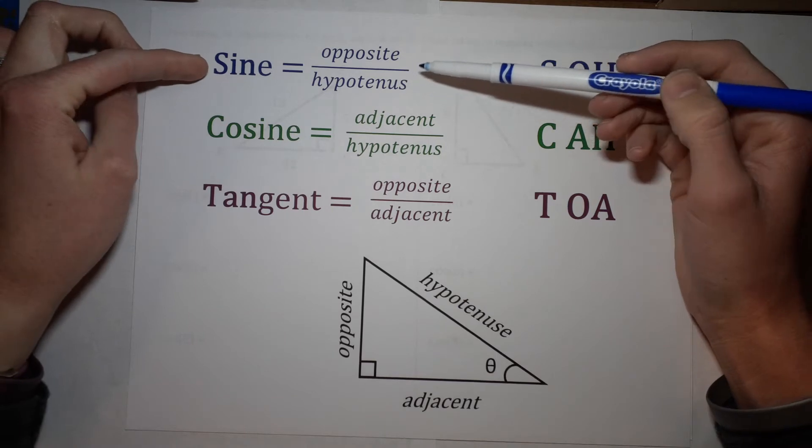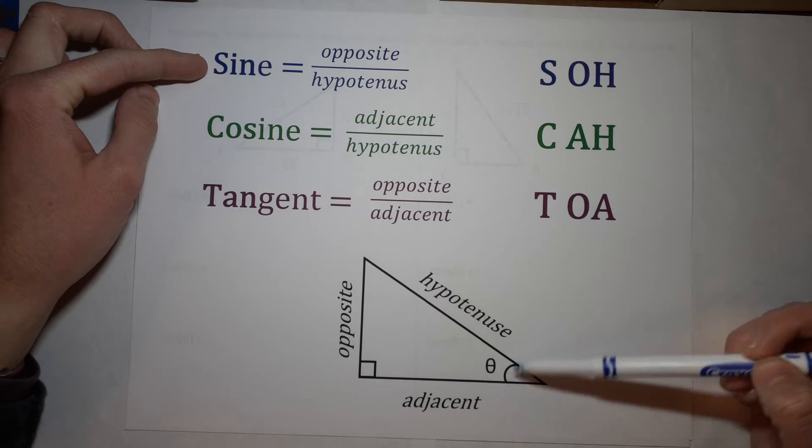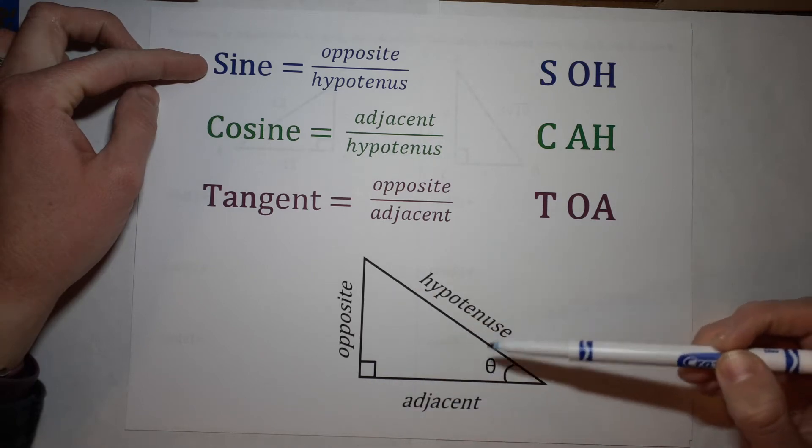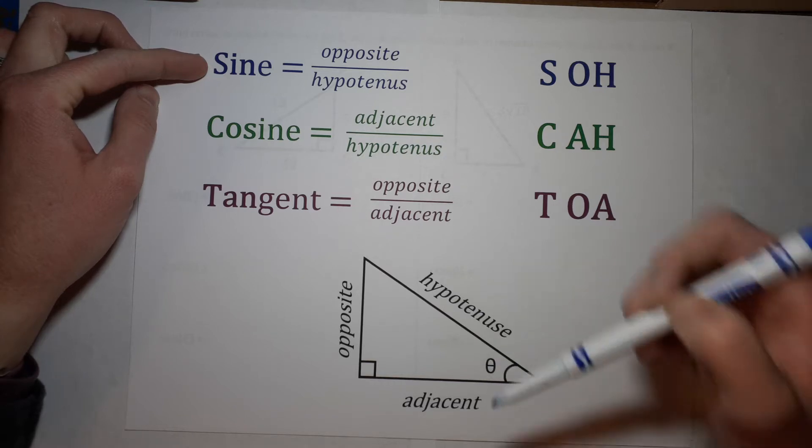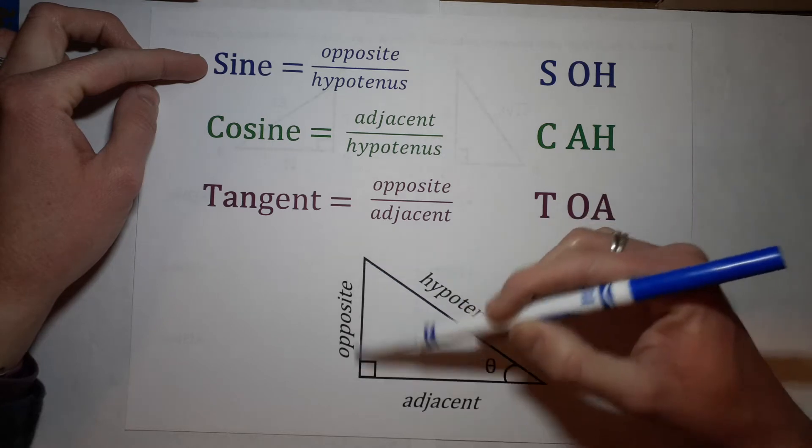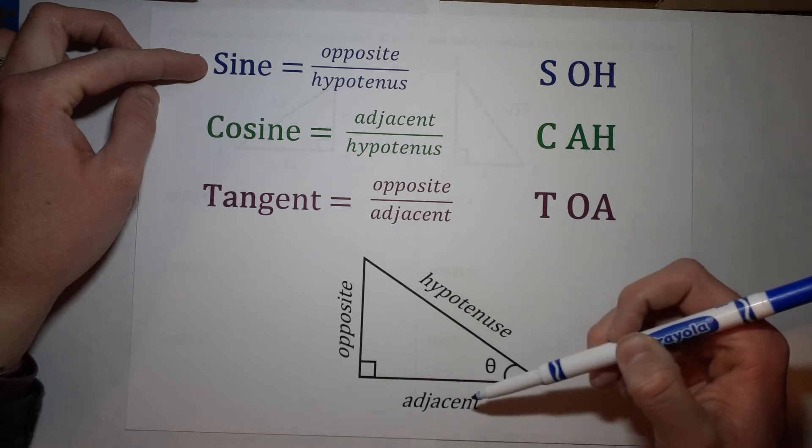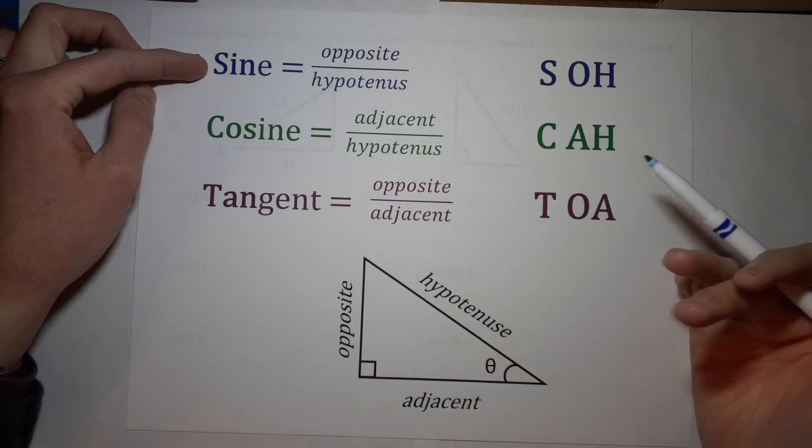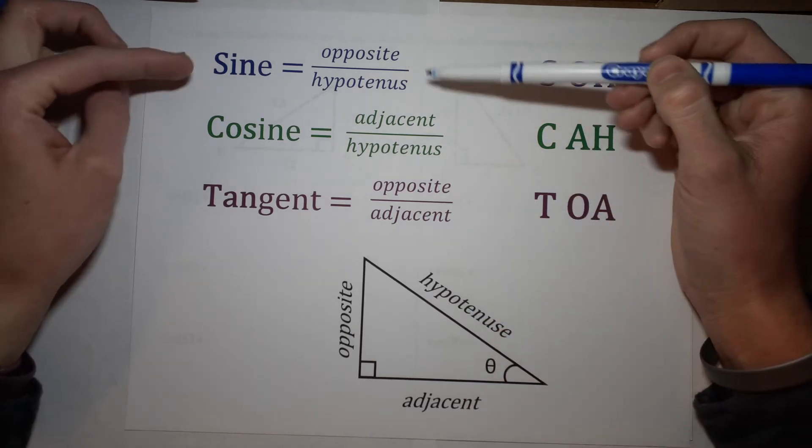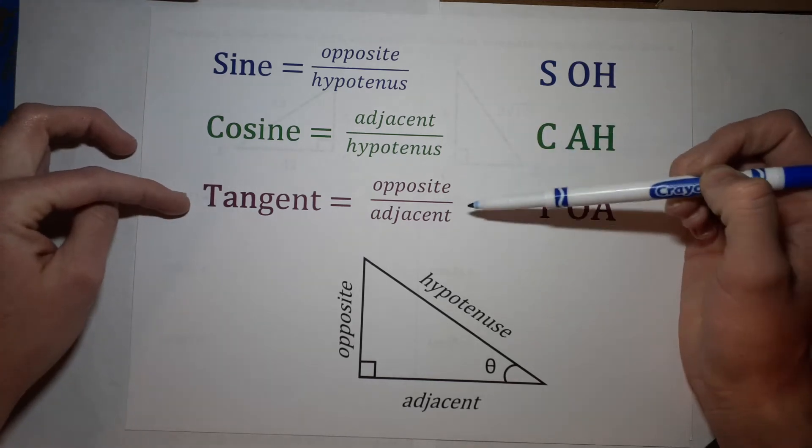Sine is a fraction with the opposite over the hypotenuse. What does that mean? Well, we're referring to the sides and it depends on which angle you're talking about. Since I have theta here - that's a fancy word for just this symbol we use for angles sometimes - the side across from theta is the opposite side, the one right next to it is the adjacent side, and then the side across from the right angle is always the hypotenuse.